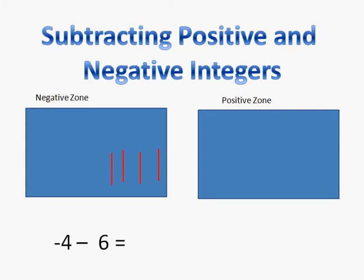Alright guys, we learned how to add positive and negative integers without using a number line. This time we're going to learn how to subtract. The number sentence I have, the subtraction problem, states negative 4 minus 6. We need to find out what that is.